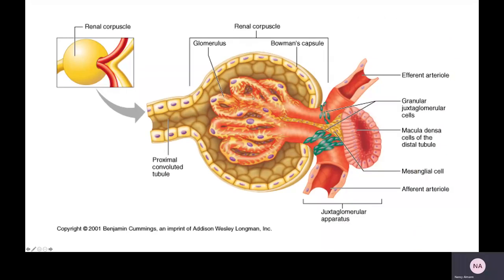The juxtaglomerular apparatus cells are also visible here — they are associated with the production of renin.